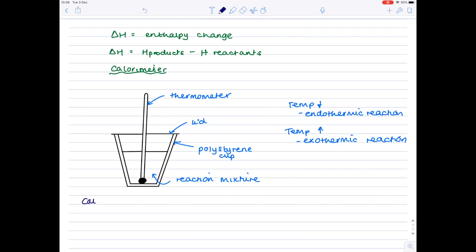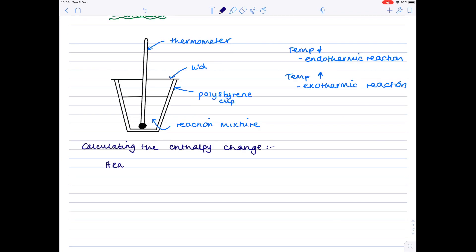Now, in order to calculate the enthalpy change, we need to use this equation, which states that heat energy equals mass times specific heat capacity times the temperature change. And we'll look at this equation in a huge amount of detail in a later video. But the point of this experiment is so that we can find out the value for the temperature change. That is why we're carrying out this experiment.